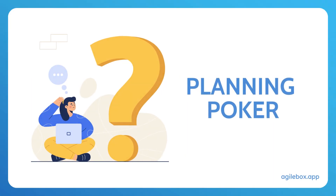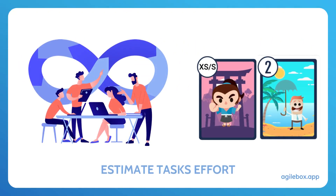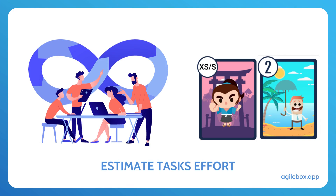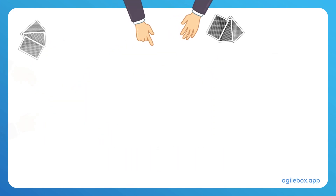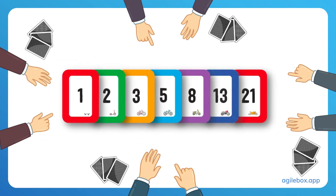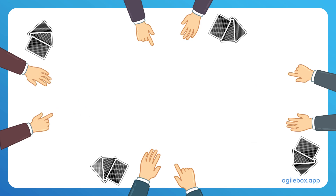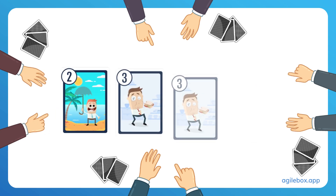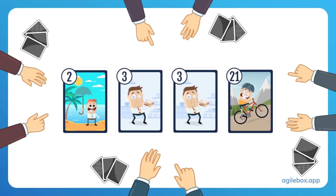So what is Planning Poker? Planning Poker is a simple method used by Agile software teams to estimate task effort. Each team member selects a card with a number on it that represents their estimate. The cards are typically based on the Fibonacci sequence, and team members reveal their cards simultaneously.